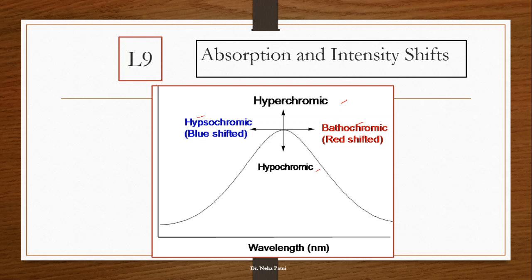At the same time, the intensity may also decrease, so in that case you will call it a hypochromic shift. In all, there is possibility of these four types of shifts: two with respect to the wavelength and two with respect to the intensity.